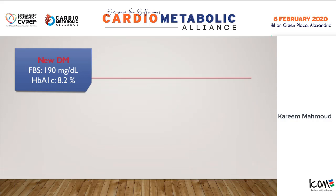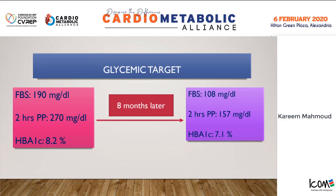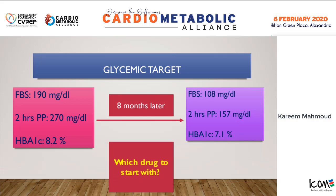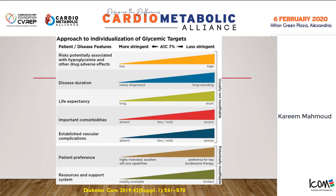First of all, we will go to the core of our session, which is diabetes mellitus. This patient has a metabolic profile that corrected over eight months to reach an acceptable hemoglobin A1C of 7.1%. The question now is which drug to start with. The glycemic target is appropriate, and we need our patient to have a hemoglobin A1C around 7%.